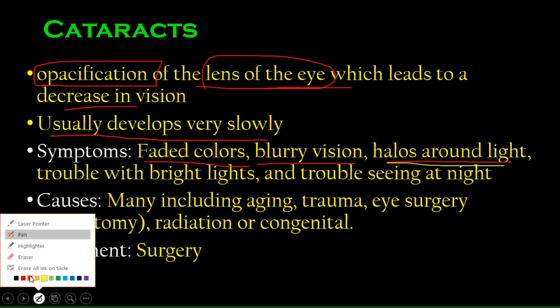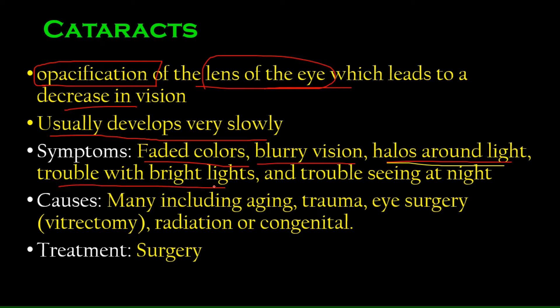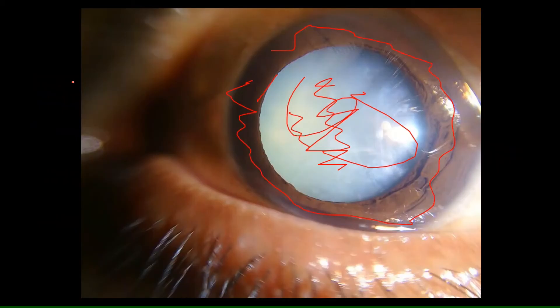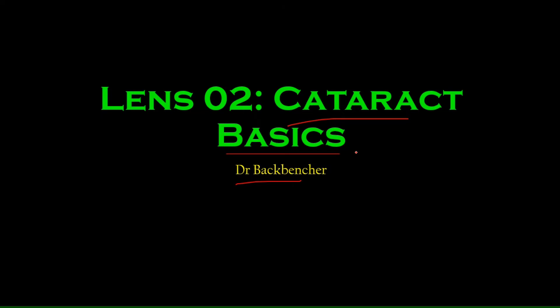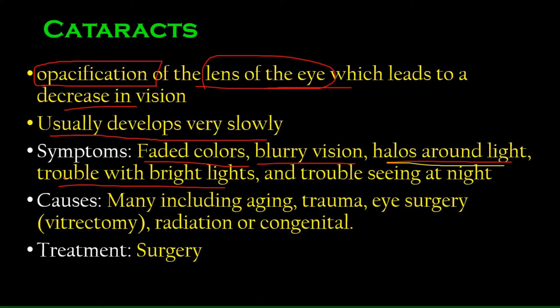Then there is trouble with bright lights. If you're driving at night, for example, and someone turns on their car headlights very bright, because your lens is kind of white, just like we saw here, the light will disperse all over the lens. As a result, you will not see properly. So halos around light, trouble with bright lights, and trouble seeing at night. Because if it's opaque at night, there's already very less light. The weak light won't be able to enter properly.